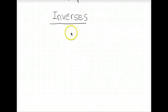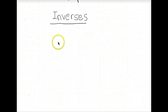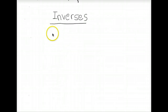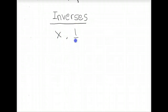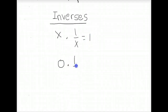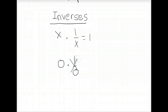Going a little further, let's talk about why 0 has no multiplicative inverse. The multiplicative inverse of x is 1 over x, giving us 1. But if we have 0, we cannot multiply it by 1 over 0 because that is undefined. So there is no multiplicative inverse for 0.